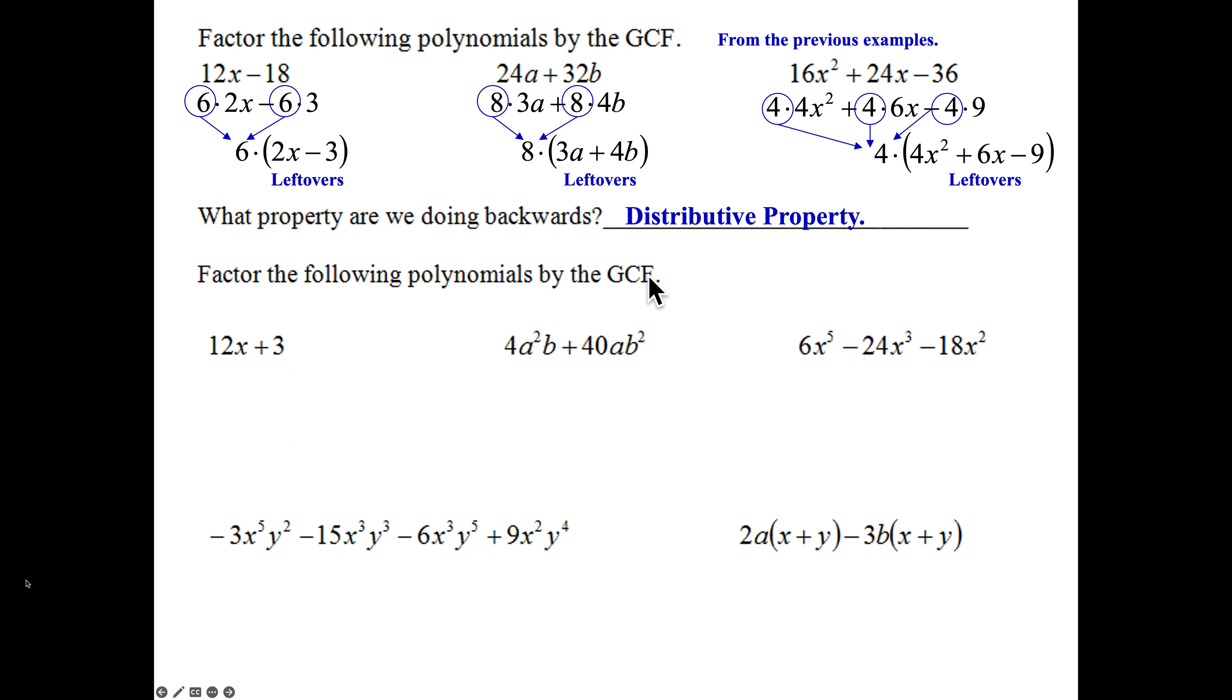So, factor the following polynomials by the GCF. Between 12x plus 3, I see a GCF of 3. Break it down. 3 times 4x plus 3 times 1. 3's go out front. 4x plus 1 is my leftovers.